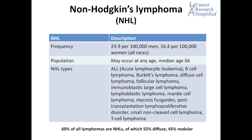Mycosis fungoides is the most common type of cutaneous T-cell lymphoma, which affects the skin. It is also known as Alibert-Bazin syndrome or granuloma fungoides. We actually recently received a question about this type of cancer from a family member of a cancer patient. Burkitt's lymphoma is an aggressive type of lymphoma that mostly affects children and young adults. It is associated with Epstein-Barr virus and is most common in Central Africa.